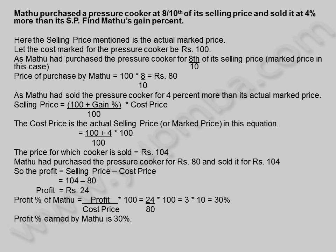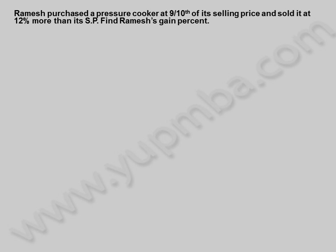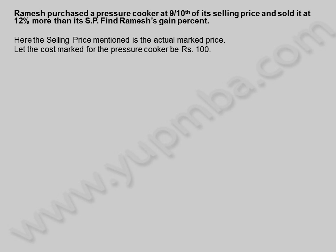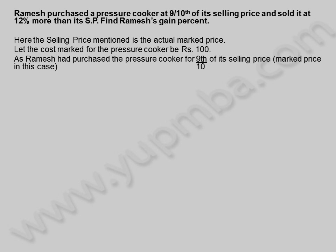Let us see another example. Ramesh purchased a pressure cooker at 9 by 10th of its selling price and sold it at 12 percentage more than its selling price. Find Ramesh's gain percent. Here the selling price mentioned is the actual marked price. Let the cost marked for the pressure cooker be 100 rupees. As Ramesh had purchased the pressure cooker for 9 by 10th of its selling price — marked price in this case — the price of purchase by Ramesh is equal to 100 into 9 by 10, which is equal to 90 rupees.